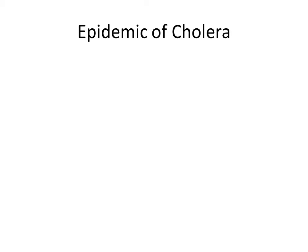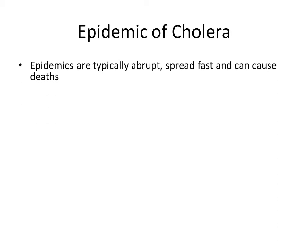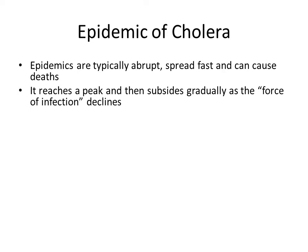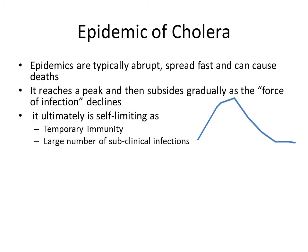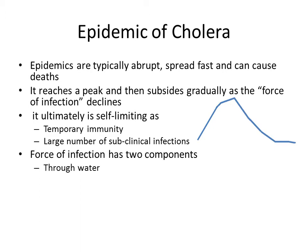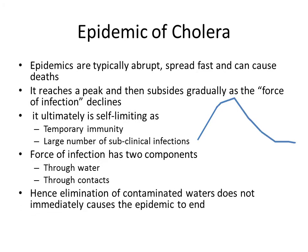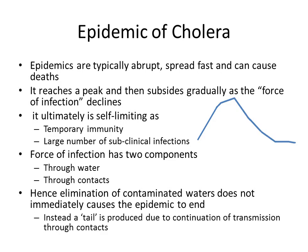An epidemic of cholera is typically abrupt in onset, spreads fast, and causes deaths. It reaches a peak and then subsides gradually as the force of infection declines. It is ultimately self-limiting because cholera confers temporary immunity and a large number of subclinical infections begin to occur. The force of infection has two components: through infected water and through person-to-person contact. Hence, elimination of the contaminated water source does not immediately end the epidemic; a tail is produced due to continuation of person-to-person transmission.